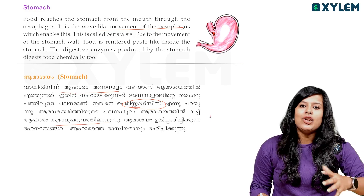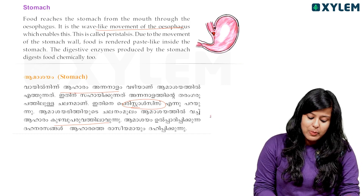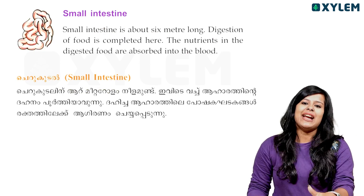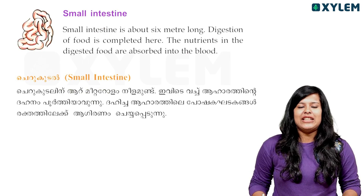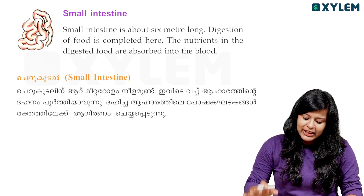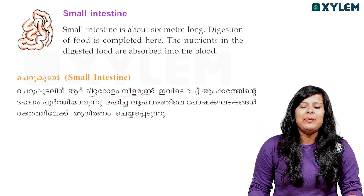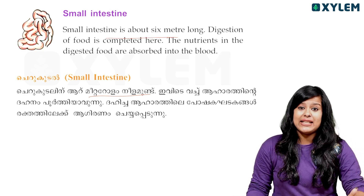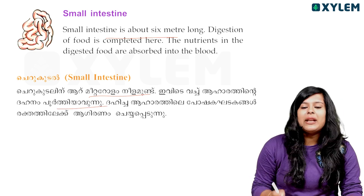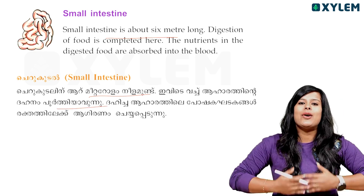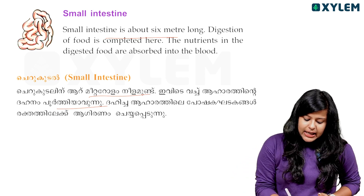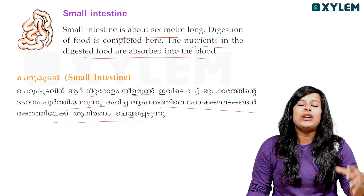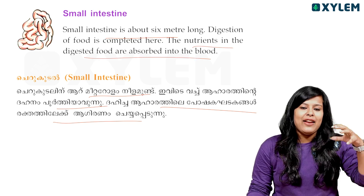The digestive enzyme produced by the stomach digests food chemically. Then we go to the small intestine. The small intestine is about 6 meters long. This is about digestion in the small intestine, where you can absorb the nutrients in the digested food.